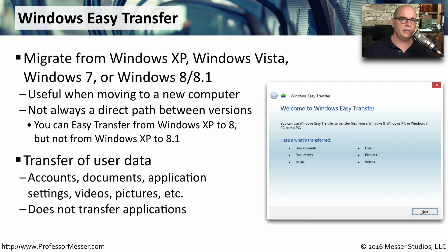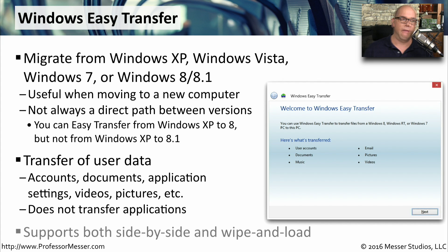Windows Easy Transfer migrates almost everything — all your user information and all of your local configurations — but it does not migrate your applications. You will still need to install applications on your new computer once you've migrated all of your data over. Windows Easy Transfer supports both a side-by-side migration and a wipe and load migration as well.